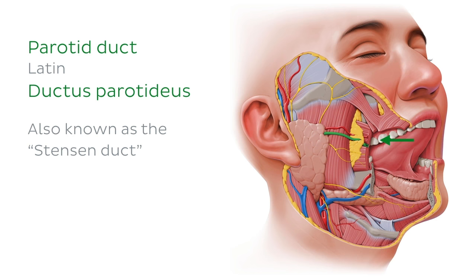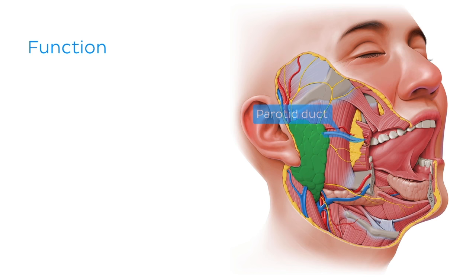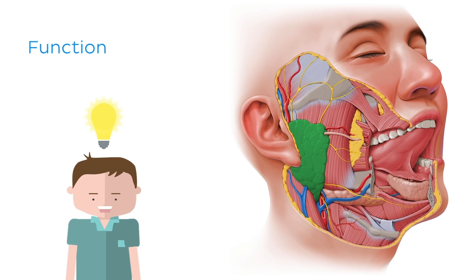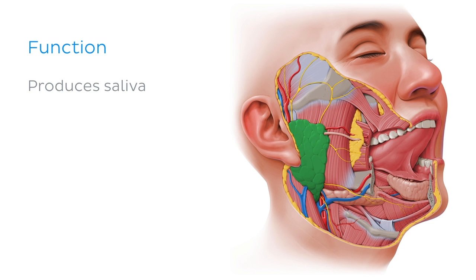You should have gotten a clue about the function of the parotid gland from the start of our tutorial, and when we talked about the parotid duct. The function of the parotid gland is pretty simple — it produces saliva. Specifically, it produces a serous saliva, which is watery and rich in enzymes. This saliva is then secreted via the parotid duct into the oral cavity, where it lubricates and assists in the breakdown of carbohydrates.